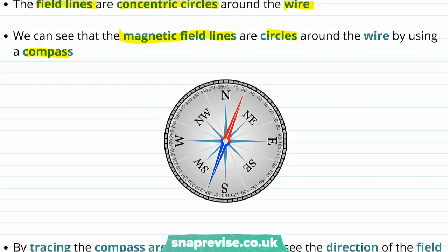...all we need to know is that the needle of a compass is a bar magnet. This bar magnet is free to rotate about the middle part here, and this means that the needle will be free to line up with the magnetic field.